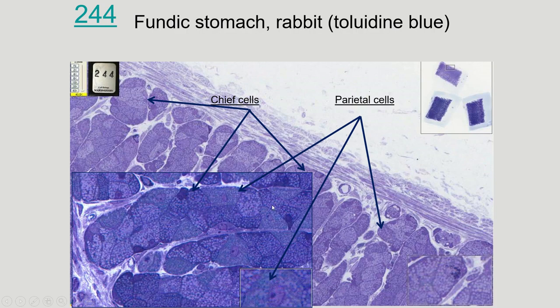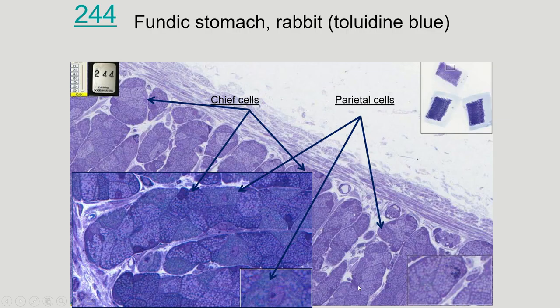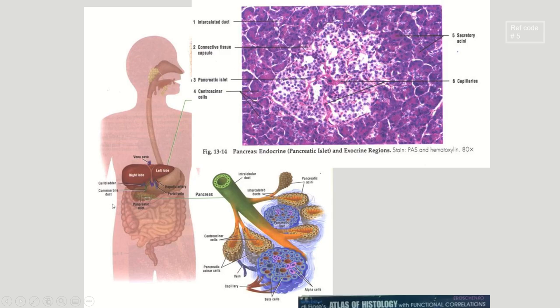Here we've got more toluidine blue of the fundic stomach — the same images as before but a more zoomed-out slide. You can see how these cells cluster together, and you've got connective tissue anchoring them down and little blood vessels. That's what we want to be looking at — just realizing how these tissues can orient themselves.